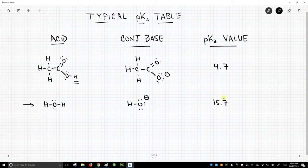And so these are two examples of molecules you will commonly see in a pKa table. So these are two examples. We have one carboxylic acid.